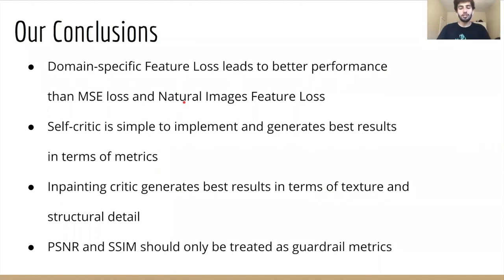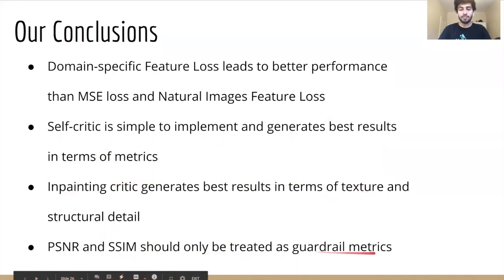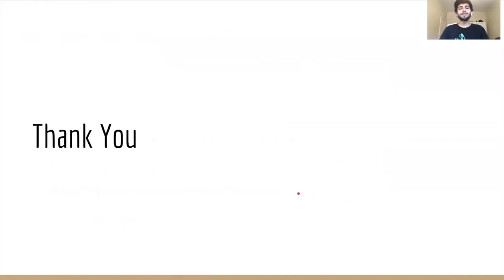To summarize the results of our project: we showed that using feature loss leads to better performance than basic MSE loss when we train our critic on domain-specific data. We also showed that the self-critic model is simple to implement and generates the best results in terms of the metrics. However, the inpainting critic generates the best results in terms of human visual inspection — specifically the texture and structural detail of its visual predictions. Finally, we note that PSNR and SSIM metrics should only be treated as guardrail metrics when looking at super-resolution models. Thank you for taking the time to listen to our project and please feel free to ask us anything.